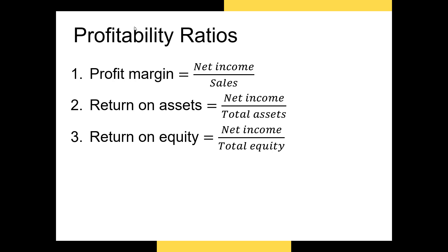Next, we have return on assets and return on equity. Return on assets is net income divided by total assets, and return on equity is net income divided by total equity. For all three of these, the larger the better. Also, the larger the leverage — the larger the amount the firm borrows — the larger the ROA is going to be relative to the ROE. ROE is often used as a measure of how well management is attaining the goal of wealth maximization for the shareholders, and is sometimes referred to as ROI, or return on investment.